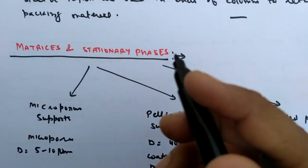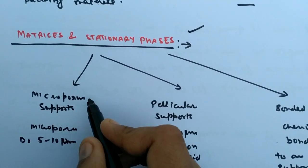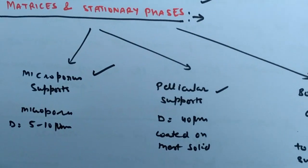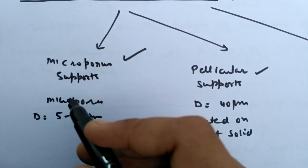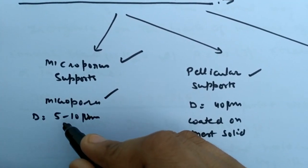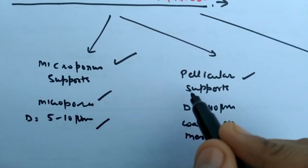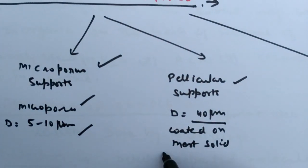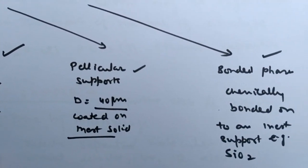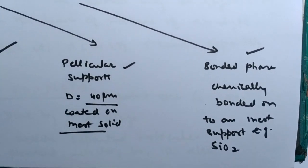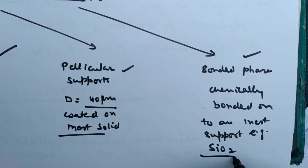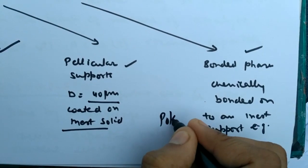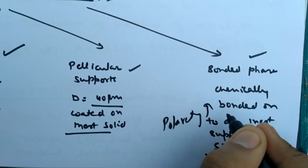For the matrices and stationary phase, there are three methods: microporous, pellicular porous, and bonded phase. In the microporous type, micropores are formed having 5 to 10 micrometer diameter. Pellicular porous has a 40 micrometer diameter and they are coated with inert material. In the bonded phase, chemically bonded substances are used — most commonly silicon dioxide — and it increases the polarity of the sample.